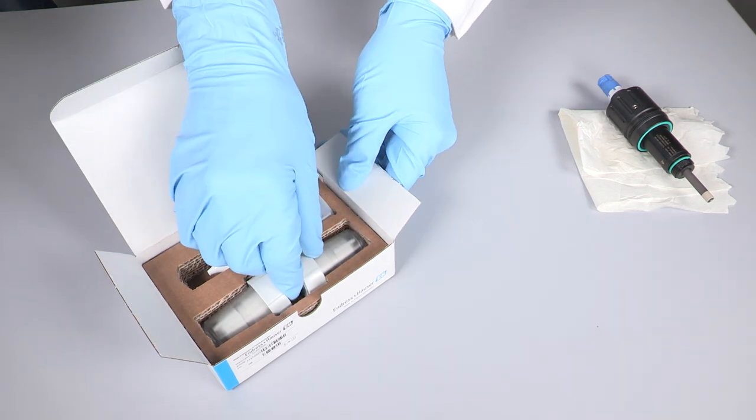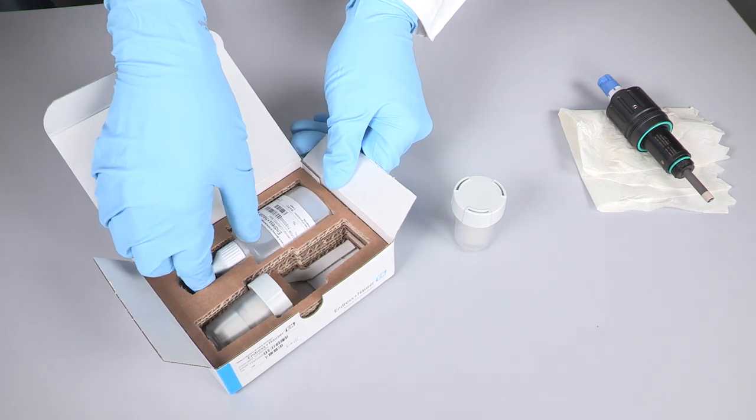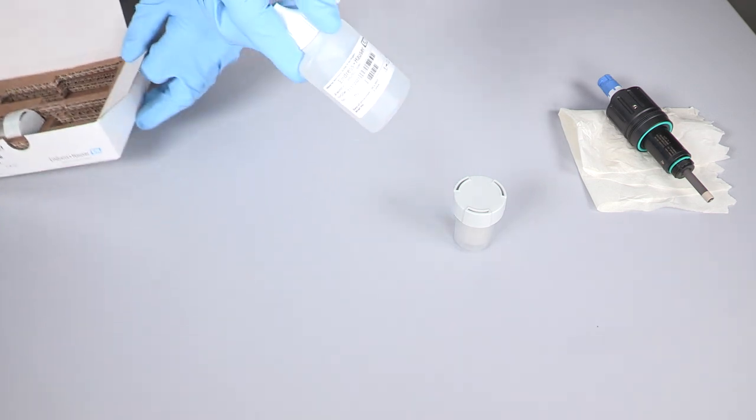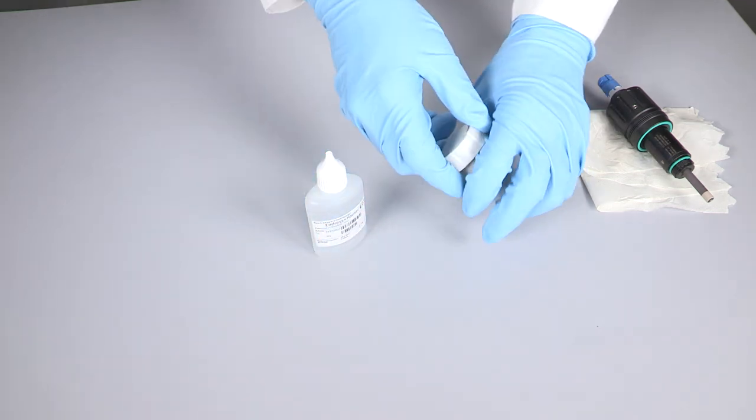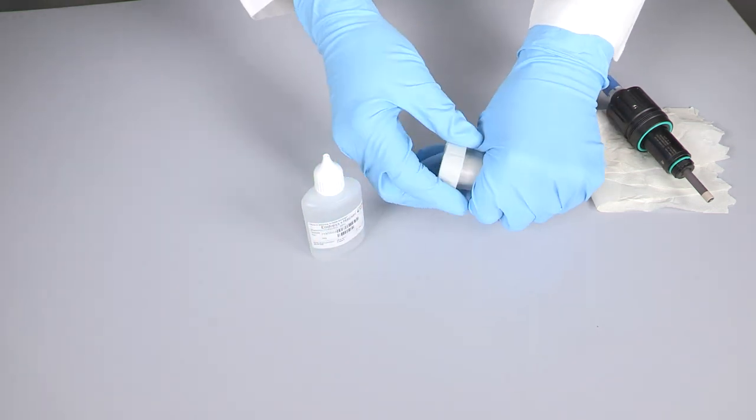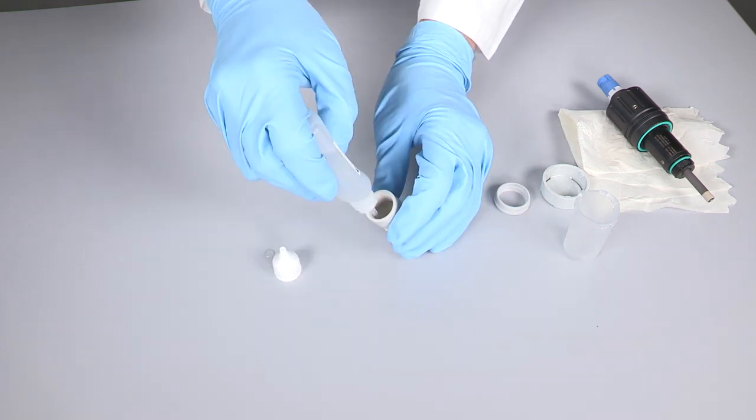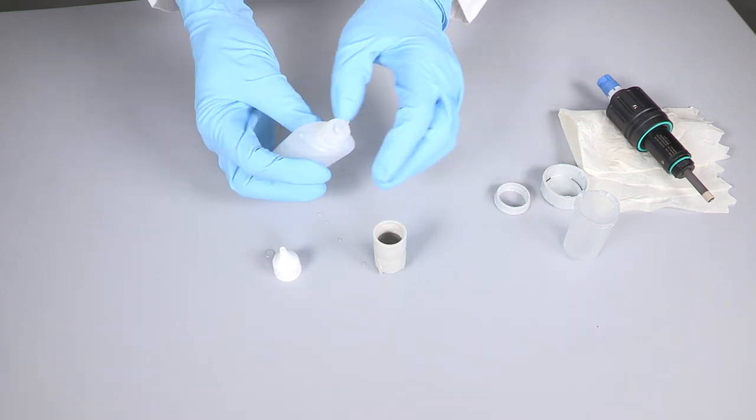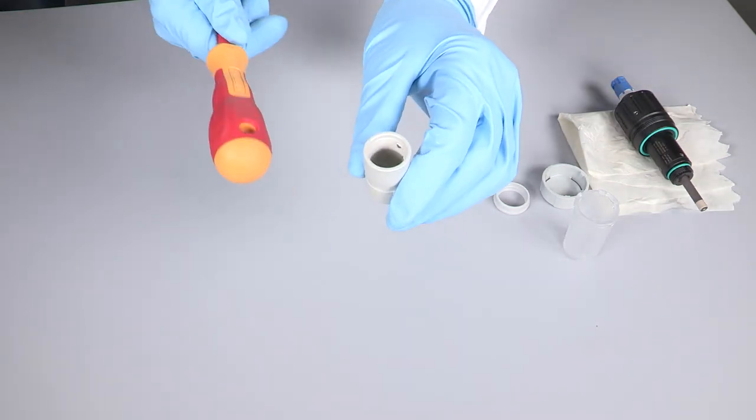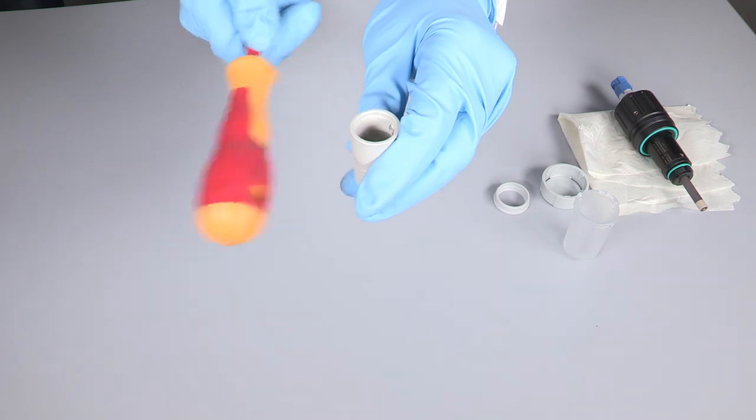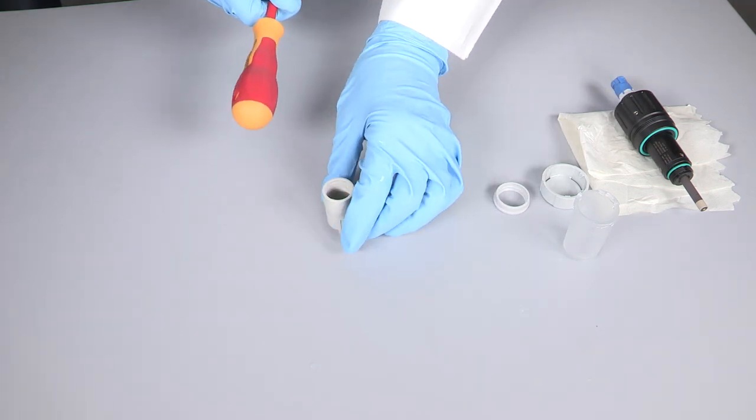Now we replace the membrane cap and the electrolyte solution. Take care that you do not use expired electrolyte, so check the date on the bottle. Fill electrolyte into the membrane cap until the start of the internal thread. Remove the gas bubbles from the electrolyte by knocking gently with a hard item, for example with a screwdriver, against the membrane cap.